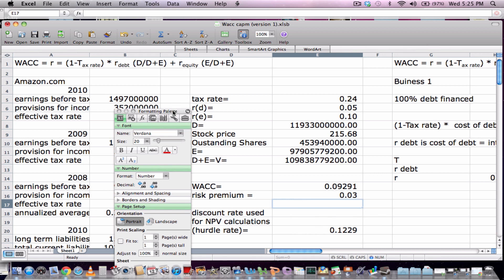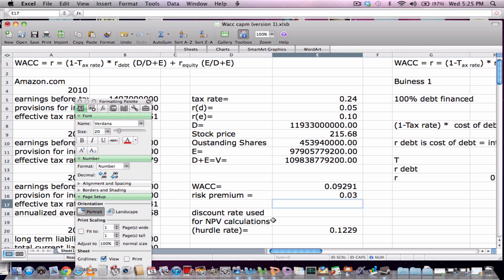And we have our discount rate for NPV calculations of 12%. Therefore, any NPV calculations using this hurdle rate that return a positive value will increase the value of the firm.